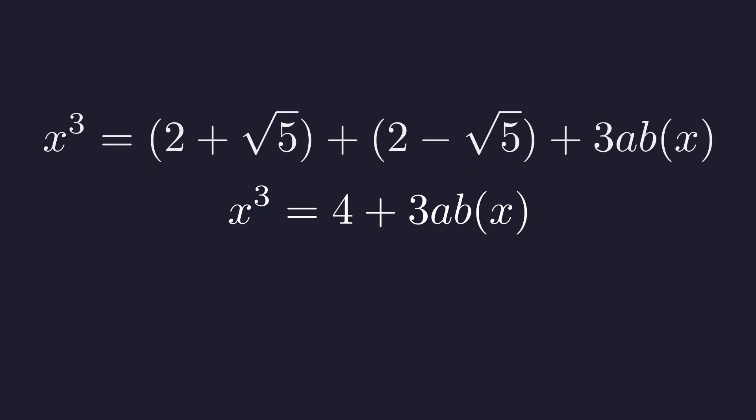We're left with something much cleaner. x cubed equals 4 plus 3 times ab times x. But we still need to figure out what a times b actually is.